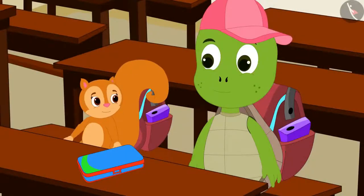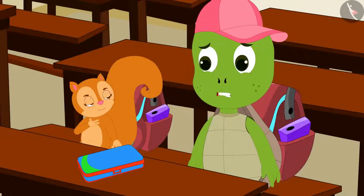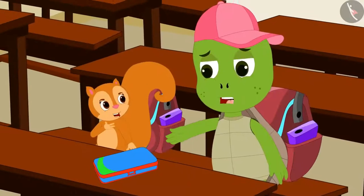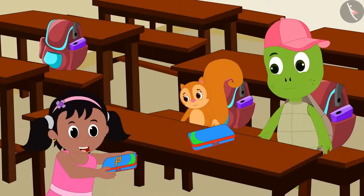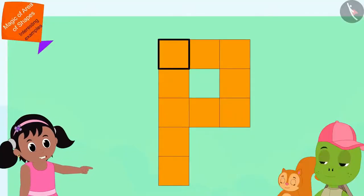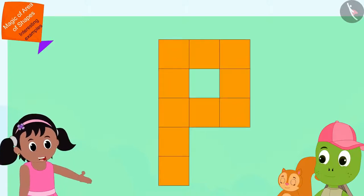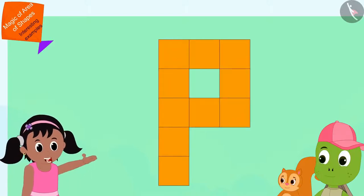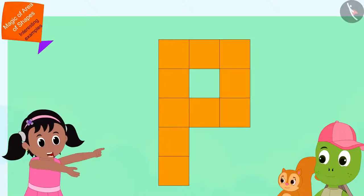This is my compass box. Chanda said to Tufan. No, this is my compass box. Tufan and Chanda started fighting. Seeing them fight, Pinky said, Look, I have used these square-shaped stickers on my compass box to make my name letter P. This allows me to easily identify my compass box. Why don't you both use these stickers to draw the letters of your name on your compass box?